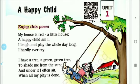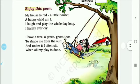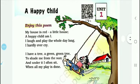The poem goes: My house is red, a little house. A happy child am I. I laugh and play the whole day long, I hardly ever cry. I have a tree, a green green tree, to save me from the sun. And under it I often sit when all my play is done.